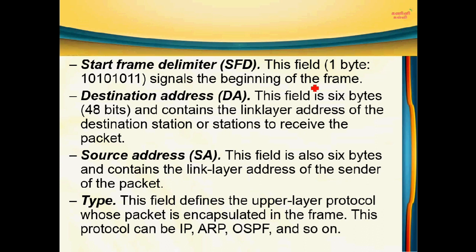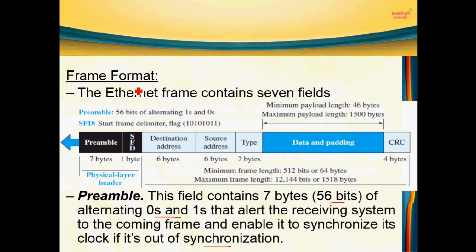The first field in the Ethernet frame format is the preamble and SFD. The SFD is 1 byte — 8 bits — in the format: 10, 10, 10, 11. The preamble and SFD belong to the physical layer. The remaining fields are related to the data link layer.